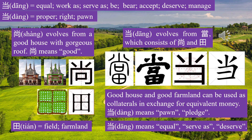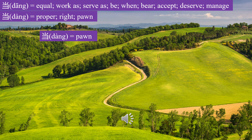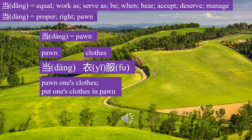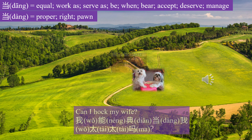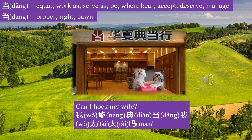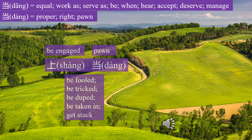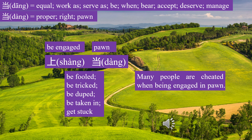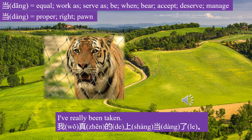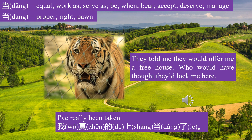Character 当 (Dàng) means pawn or pledge. 当衣服 means to pawn clothes. 典当 means to pawn. 当 (Dāng) means equal or proper. 上当 means to be fooled. 我真的上当了 — I've really been taken in. Many people are cheated when engaging in pawning. They told me they would offer me a free house — who would have thought they'd lock me here?